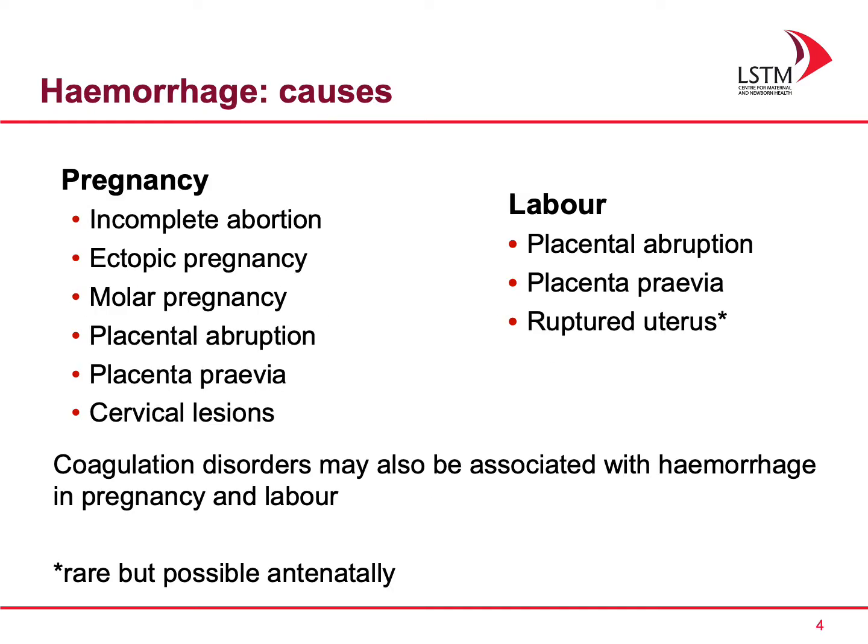What are some of the causes of haemorrhage? This can be looked at as bleeding during pregnancy or during labour. During pregnancy, causes can include incomplete abortions, ectopic pregnancy, molar pregnancy, abruption or placenta previa, and cervical issues. Most of us forget that even though a lady is pregnant, she's still at risk of gynaecological problems — for example, cancer of the cervix, which will still cause bleeding. During labour, causes include placental abruption or previa, ruptured uterus, and coagulation disorders, which can also be a problem either during pregnancy or during labour.